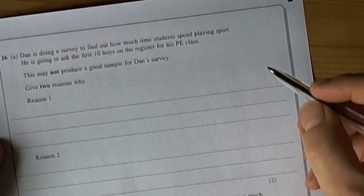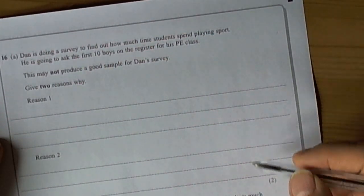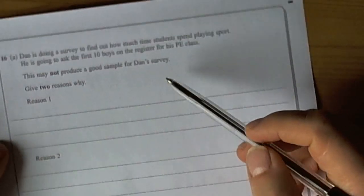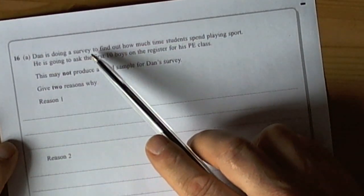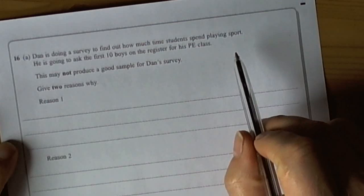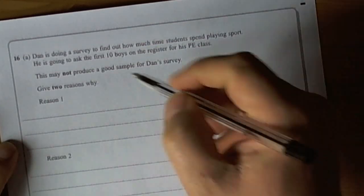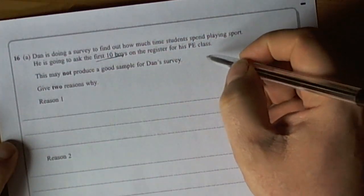Ok, so questions on collecting data, sampling and bias. We've got a question here where Dan is doing a survey. He wants to find out how much time students spend playing sport. He's going to ask the first ten boys on the register.